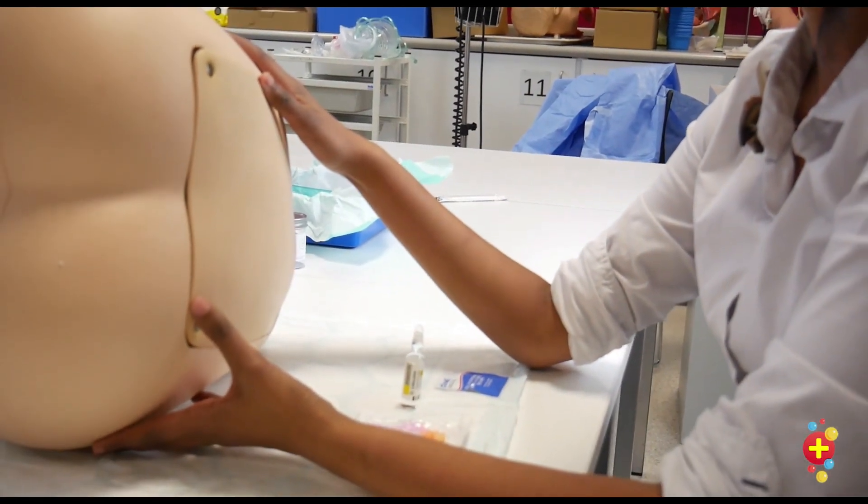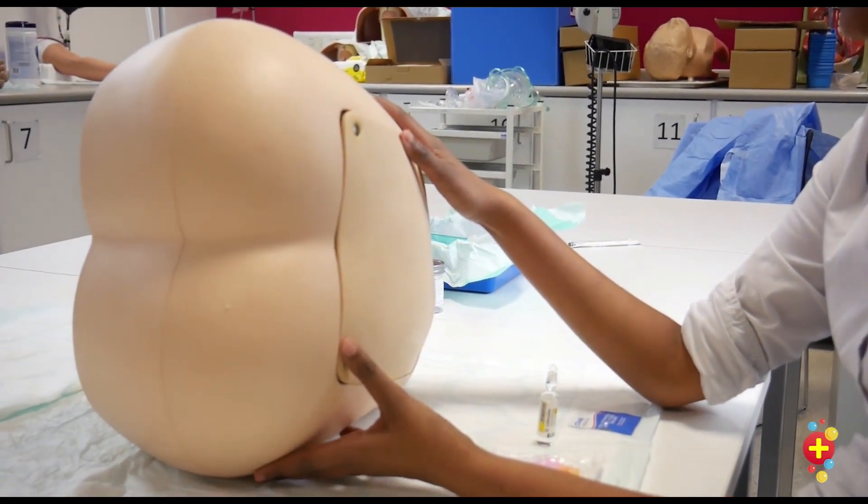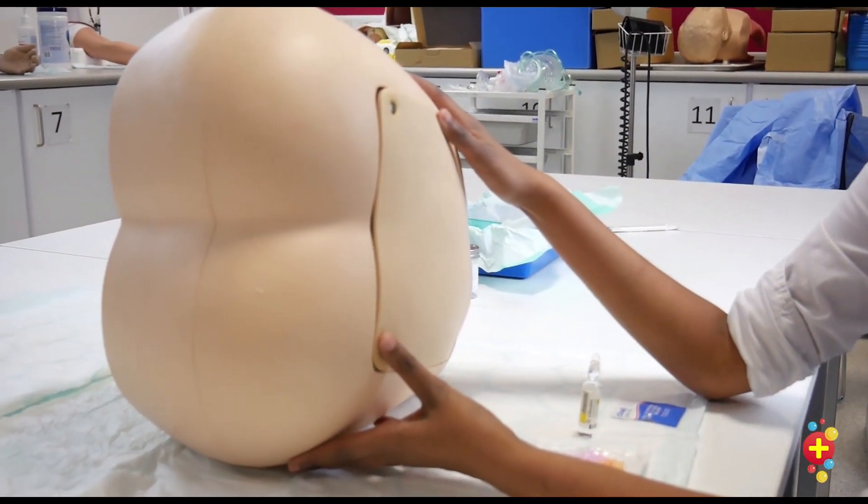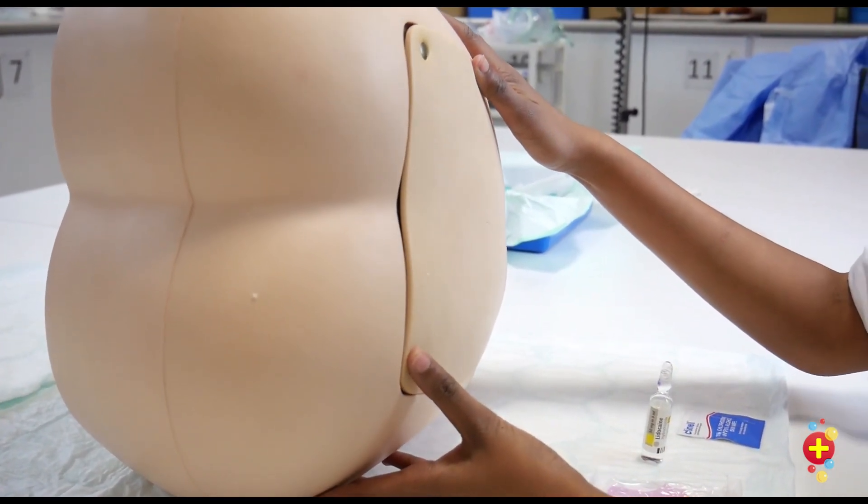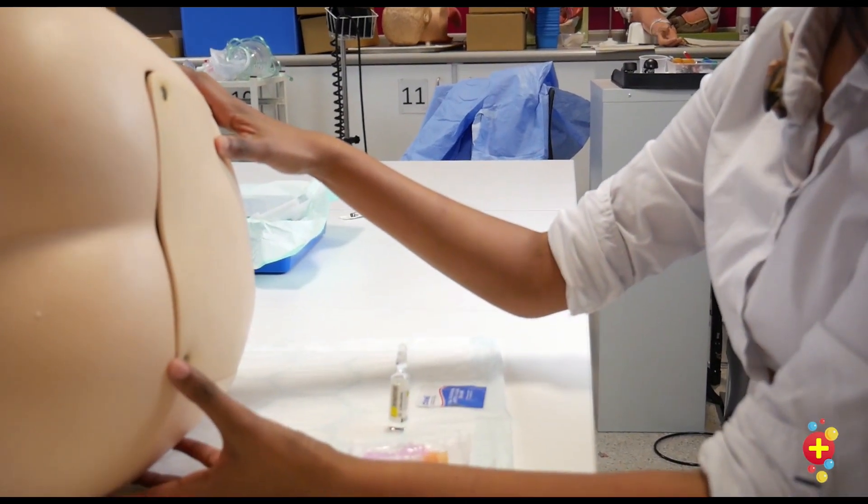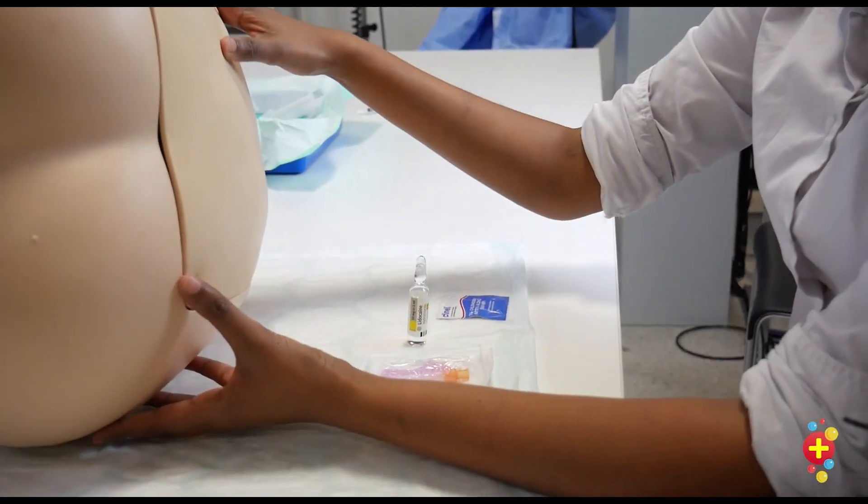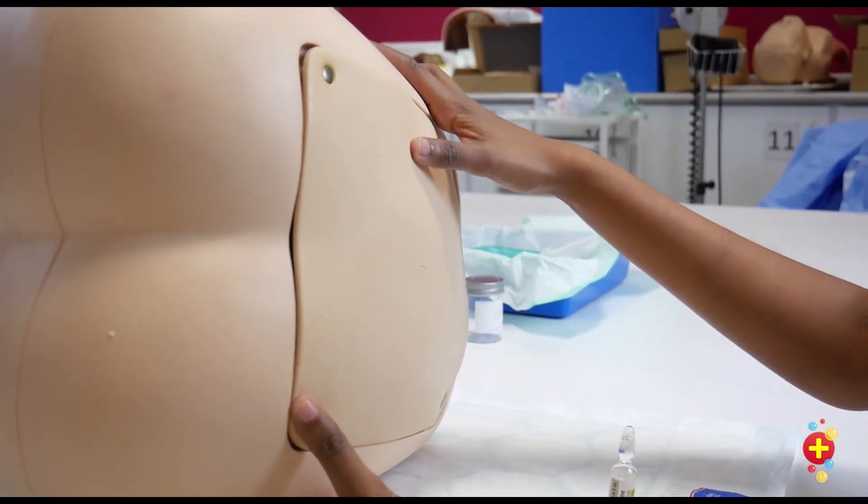The most important thing when preparing for a lumbar puncture is making sure that your patient is in the correct position and that you're comfortable with the positioning. You want the bed at the height that is comfortable for you, and you can decide whether you're going to sit or stand for the procedure. The patient should be in the left or right lateral position with their knees to their chest.